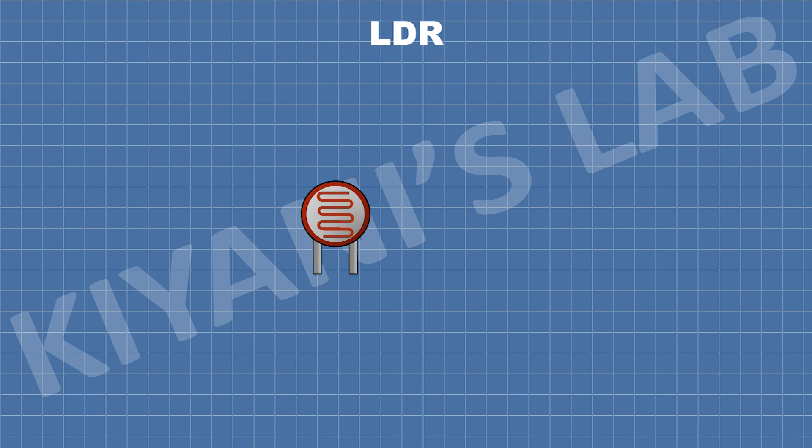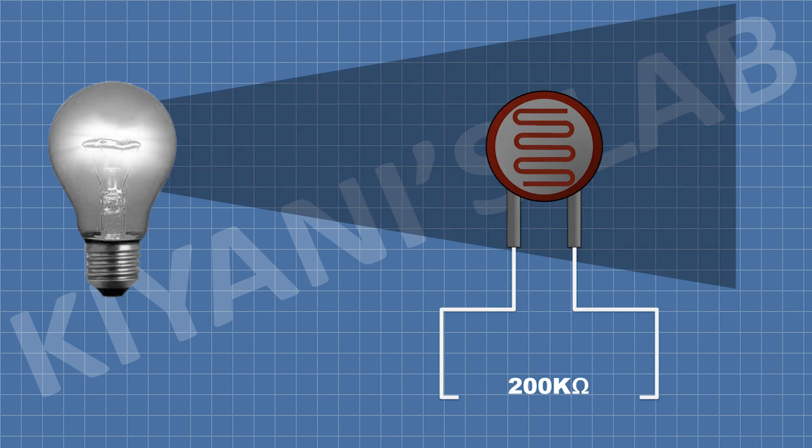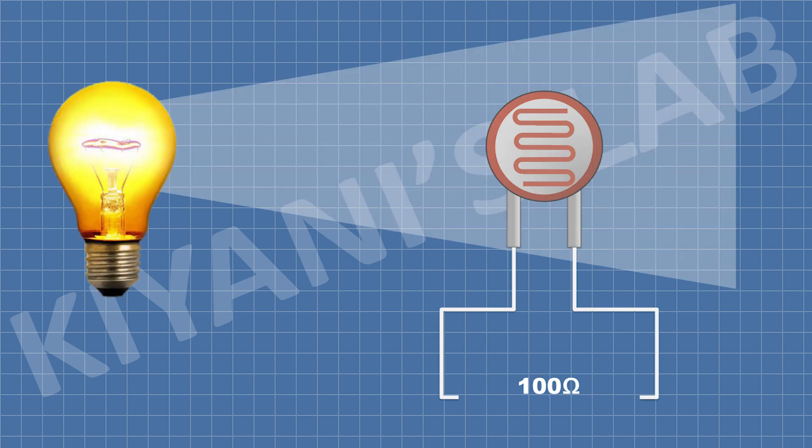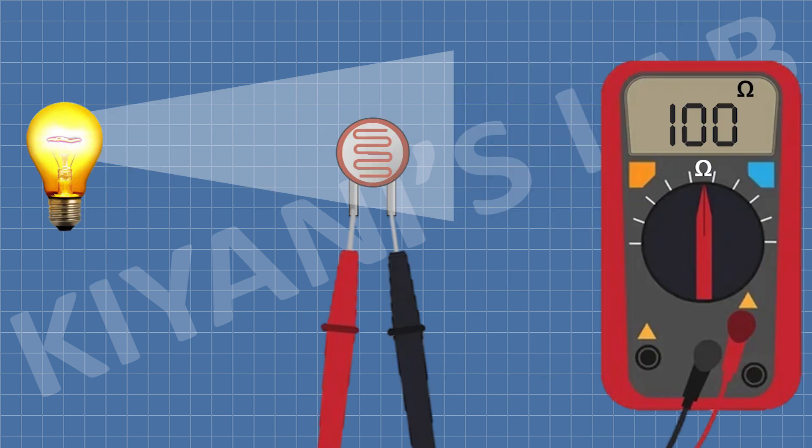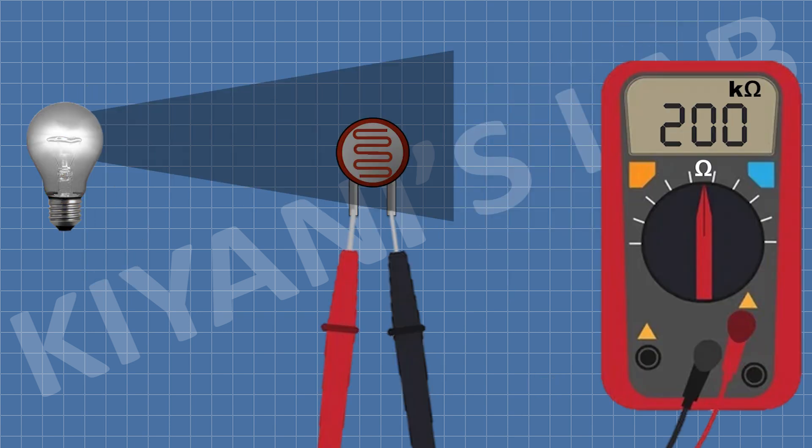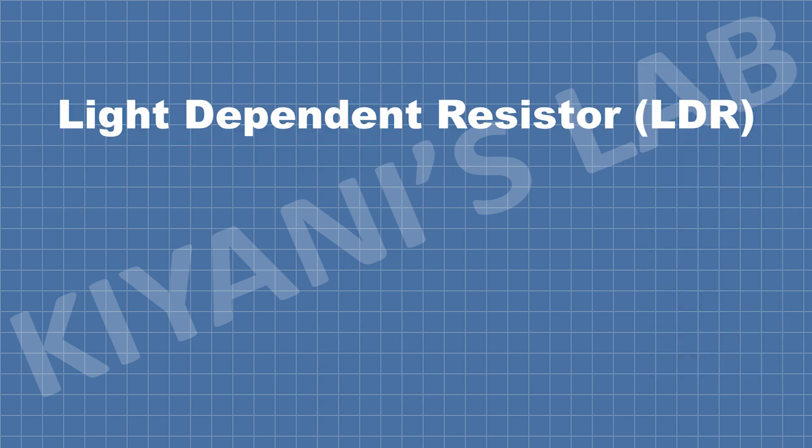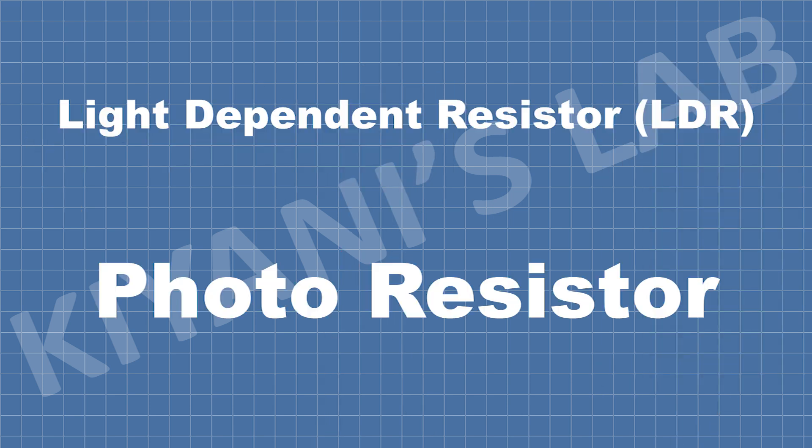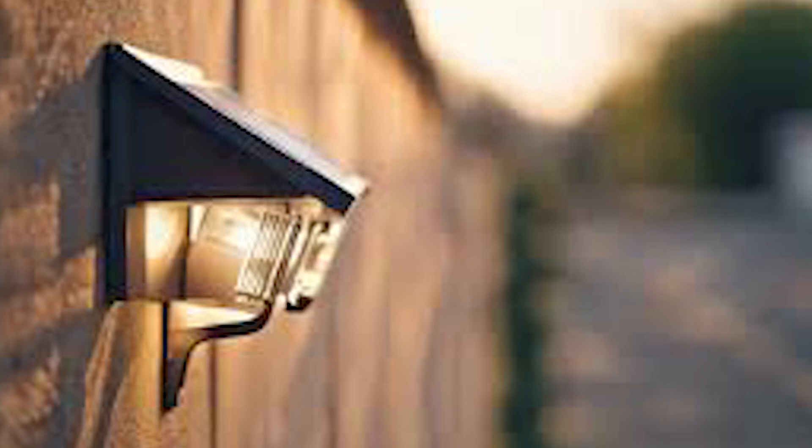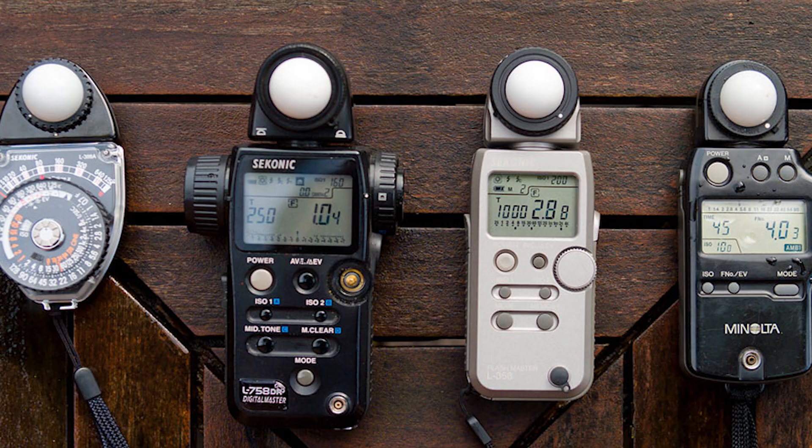So what exactly is an LDR? A light dependent resistor is a type of resistor that changes its resistance based on the amount of light falling on it. In simple terms, it becomes less resistive when there is more light and more resistive in the dark. LDRs are also known as photoresistors and they are widely used in light sensing circuits. You'll often find them in devices like automatic night lamps, streetlights, and light meters.